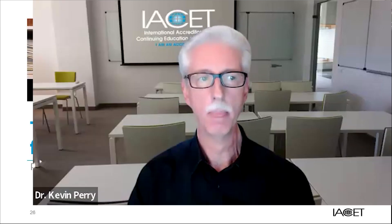Thank you, Karen. Well, hello everybody. Thanks again for tuning in. I'm going to spend a good part of my time with you describing the three types of documents that you heard Karen allude to a minute ago, which are documents you'll need to submit in your application. Those, again, are policies, processes, and evidence. Accreditation involves submitting these types of documents throughout the application, which are designed to show that your organization is in compliance with the entire IACET standard.